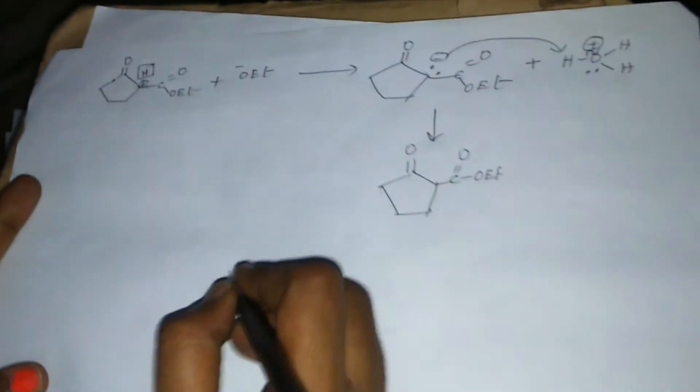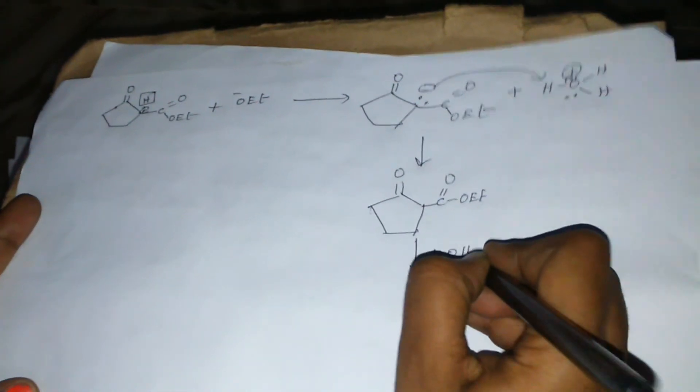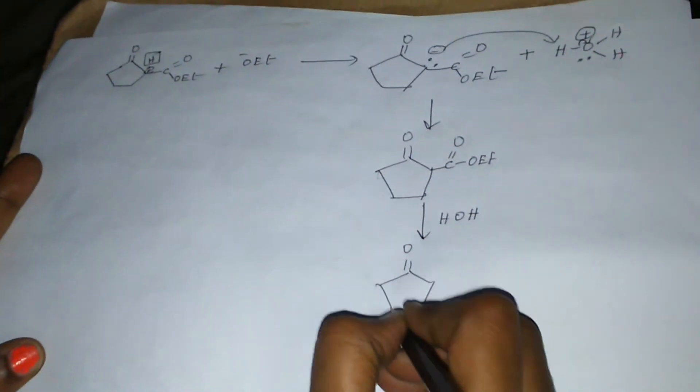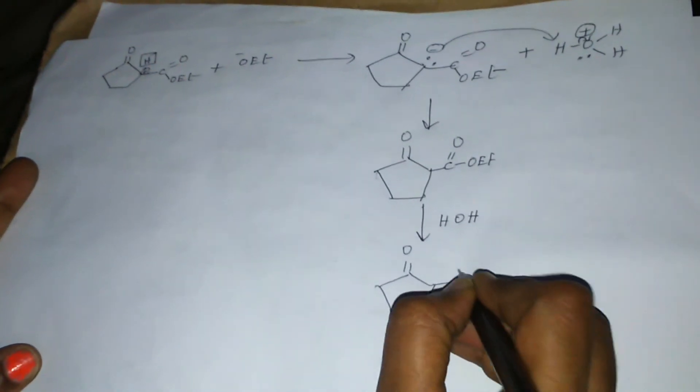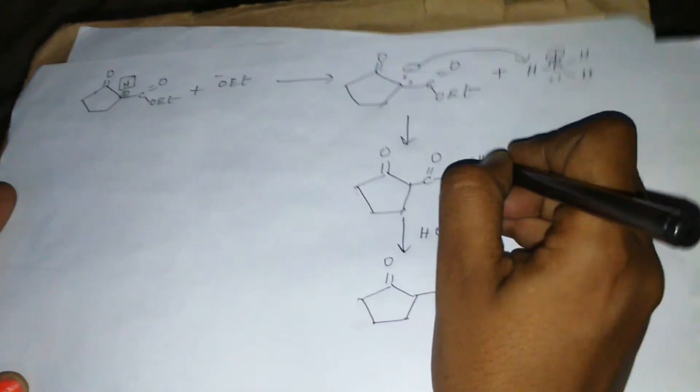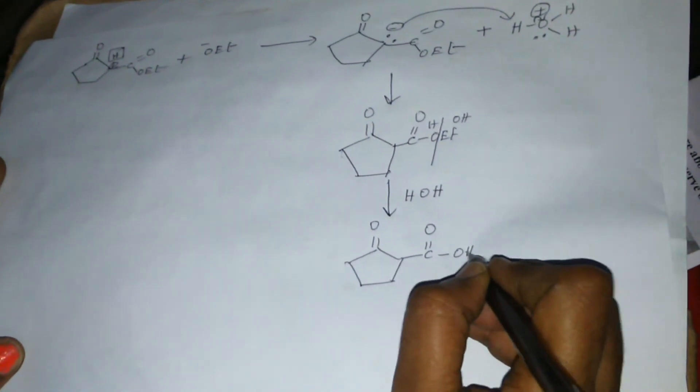Now, in the next step, hydrolysis takes place. Now you see OH is added here, hydrogen is added, and it is converted into a carboxylic acid derivative.